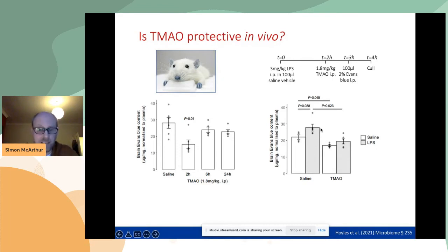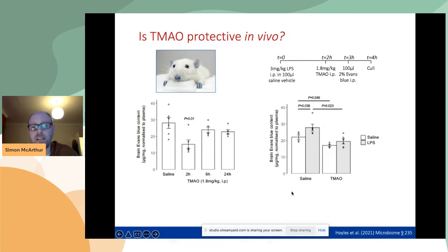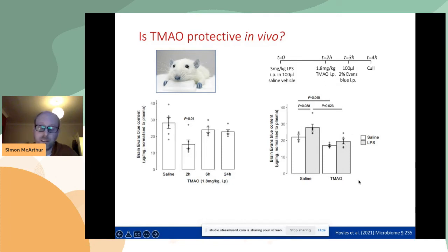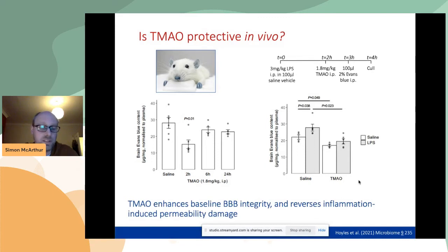That's at baseline. We also challenged the animals with a peripheral injection of LPS at a dose we know causes an increase in blood-brain barrier permeability, which you can see here. Giving TMAO after LPS can block the permeabilization, restoring blood-brain barrier function. So TMAO enhances baseline blood-brain barrier integrity and appears to reverse inflammation-induced permeability damage.